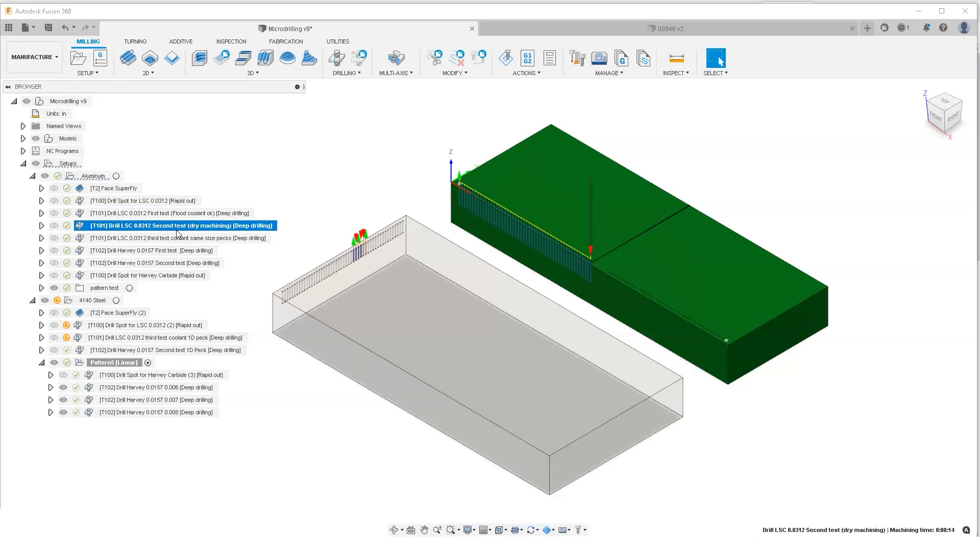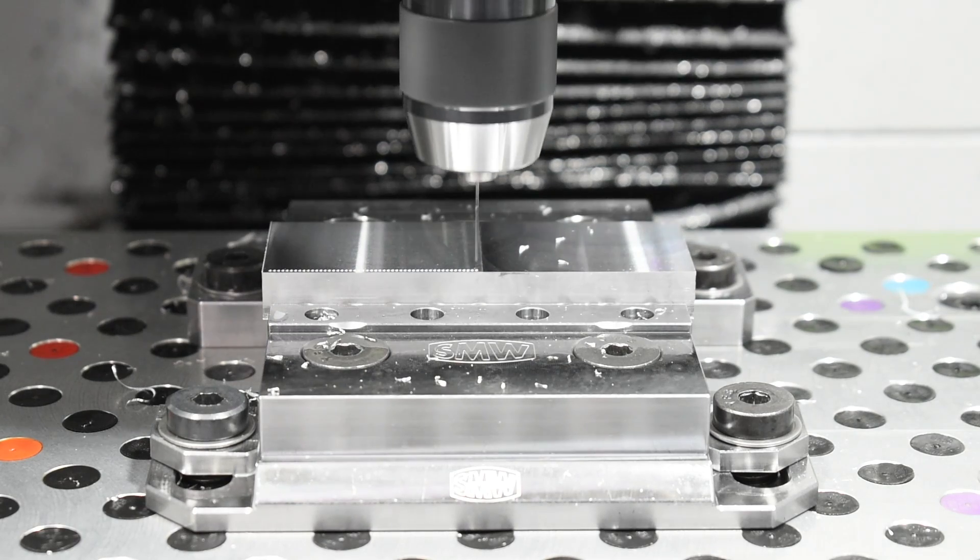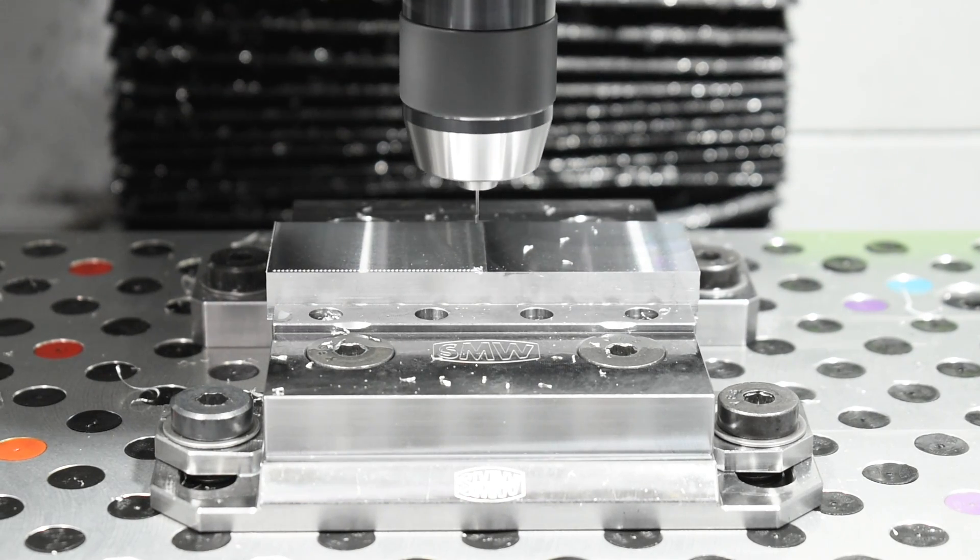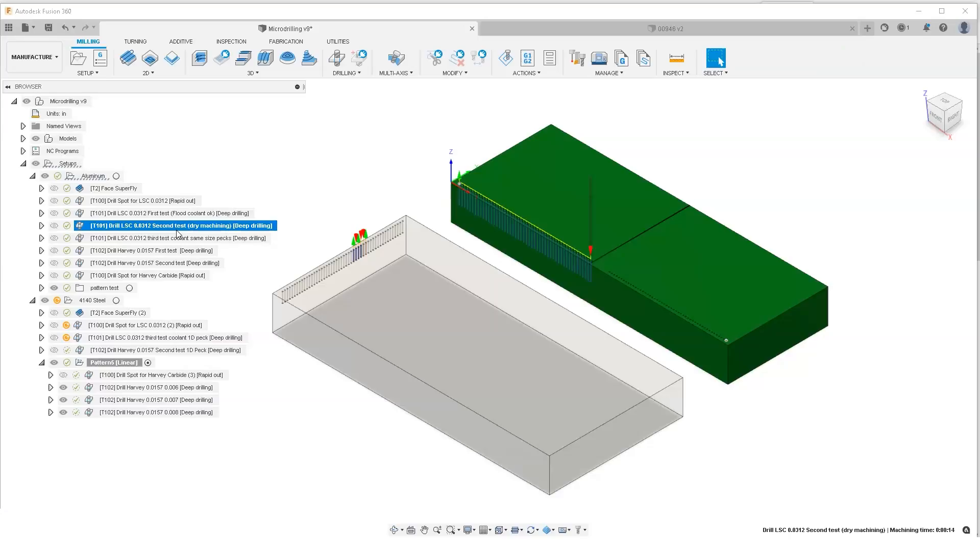My second test I tried to run it dry with peck and also not a good idea. You cannot run these small drills dry. They definitely need well-aimed coolant. Now for my third test I used pecking with around the same size of diameter. So I pecked in thirty seven thousandths.